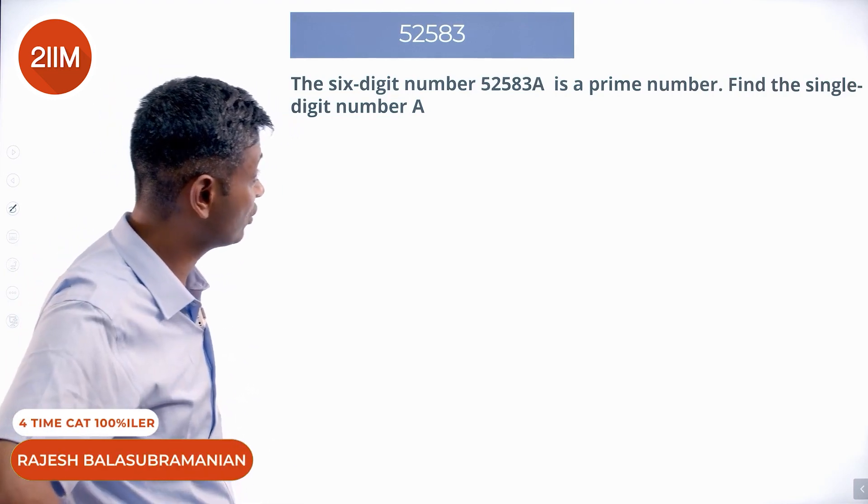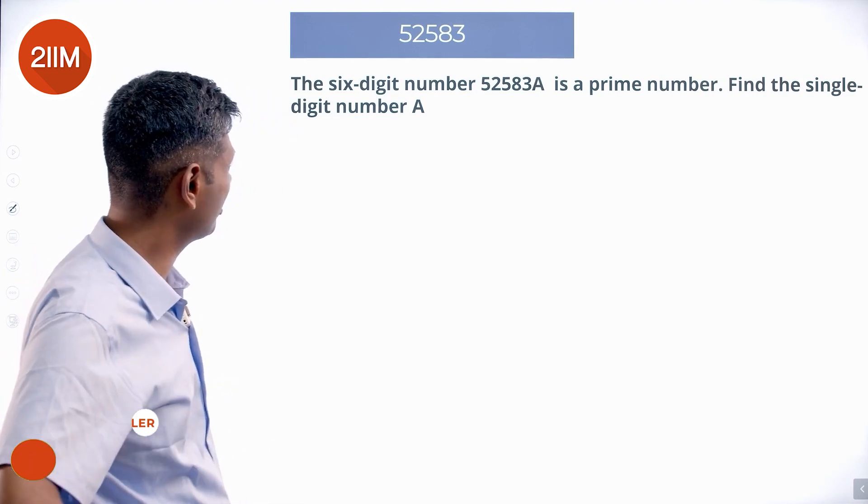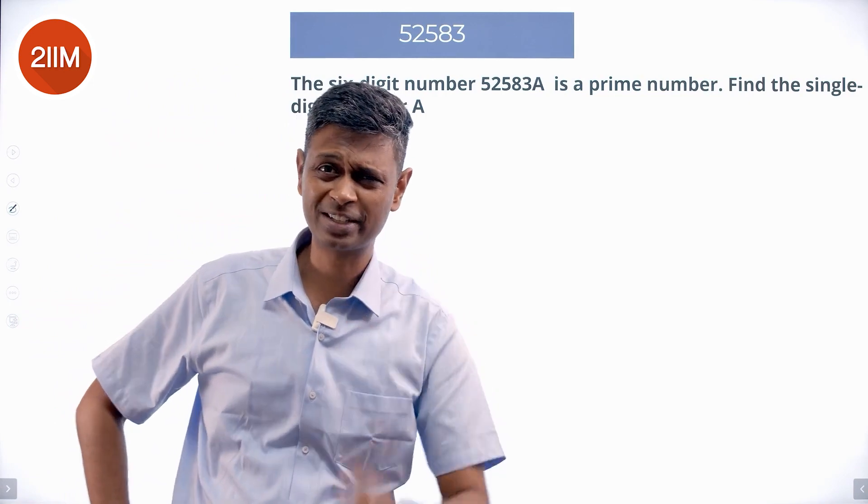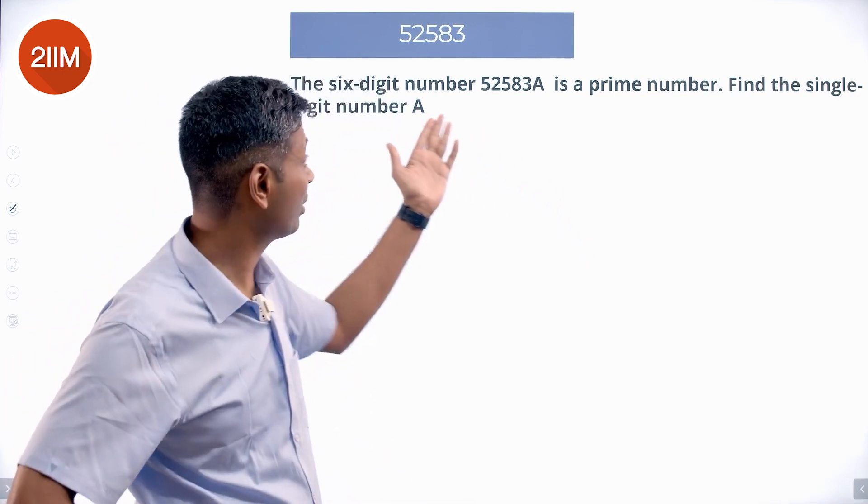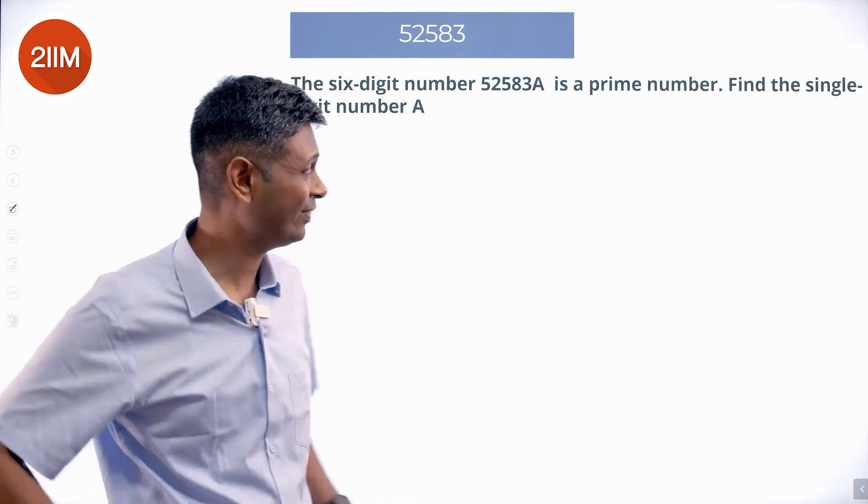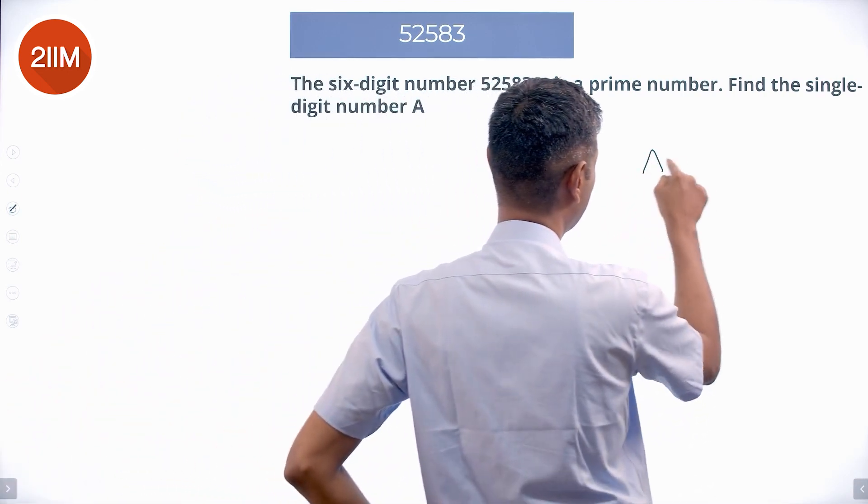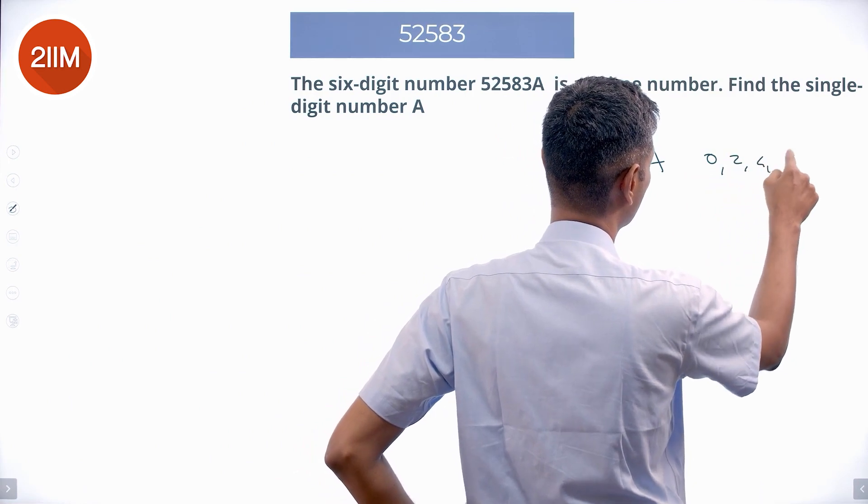The 6-digit number 52583A is a prime number. Find the single-digit number A. Beautiful question, one of my favorites. If it's a prime number, that means it's not an even number. So straight away, A cannot be 0, 2, 4, 6, or 8.